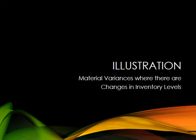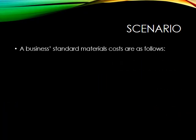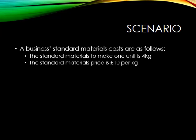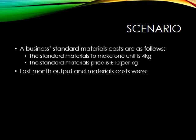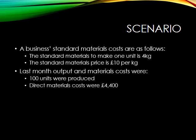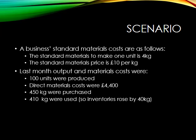Let's have a look at an illustration. The standard materials required to make one unit is four kilograms, and the price per kilogram is ten pounds. Details of output and materials costs for the previous period: one hundred units were produced, the material costs were four thousand four hundred pounds, and four hundred and fifty kilograms were purchased, but only four hundred and ten kilograms were used. So we purchased more than we used, meaning our inventories ended up rising by forty kilograms.